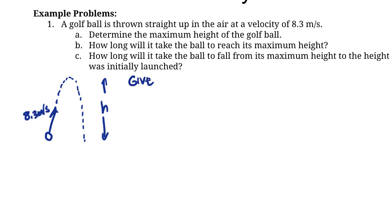We are given that the initial velocity of the ball is 8.3 meters per second. That's pretty straightforward, but that sort of seems like that's all the question gives us. And this is where our assumptions come in.